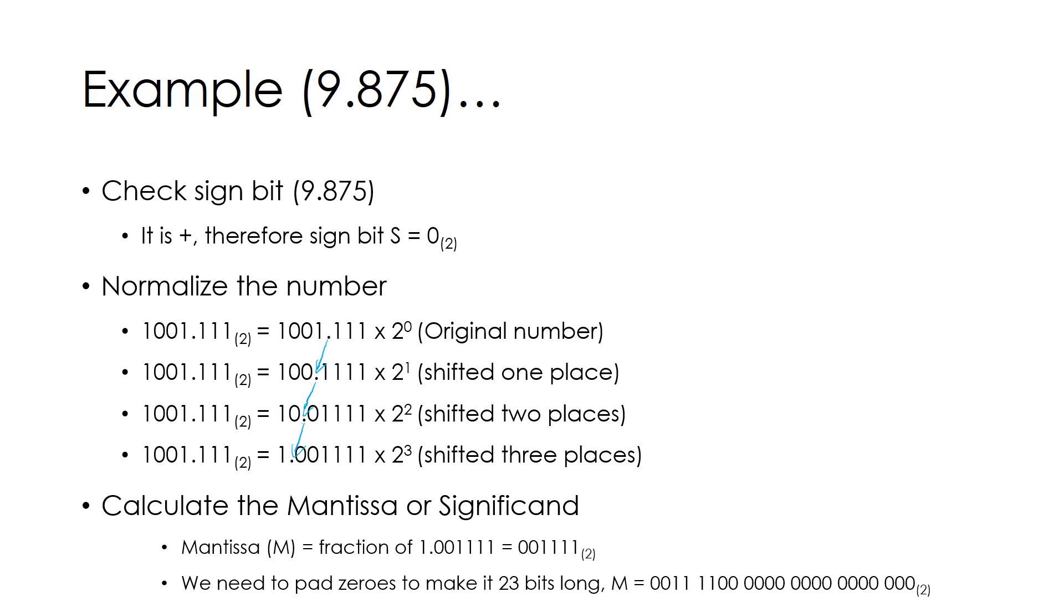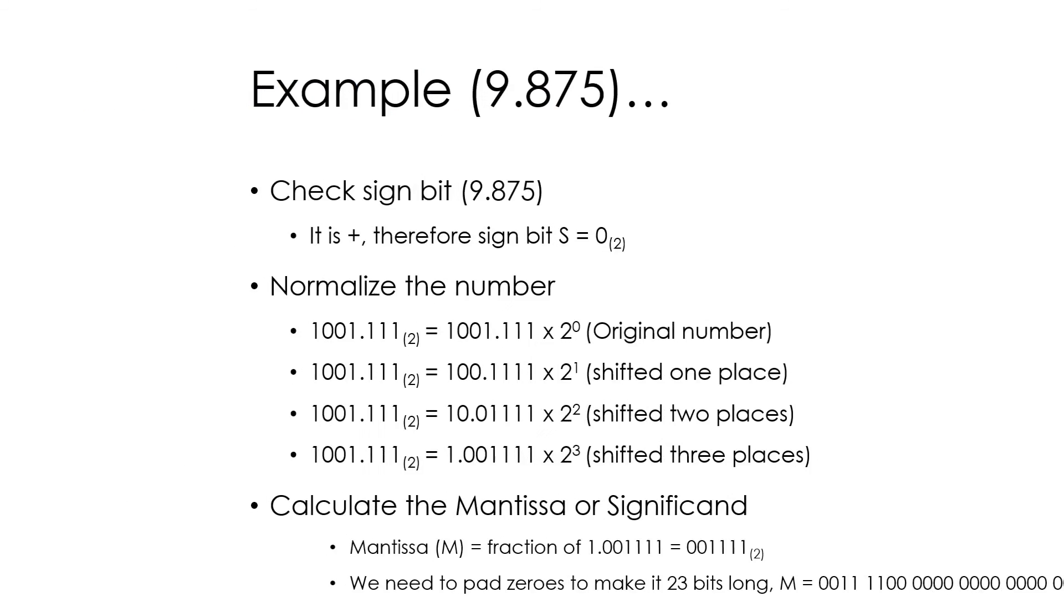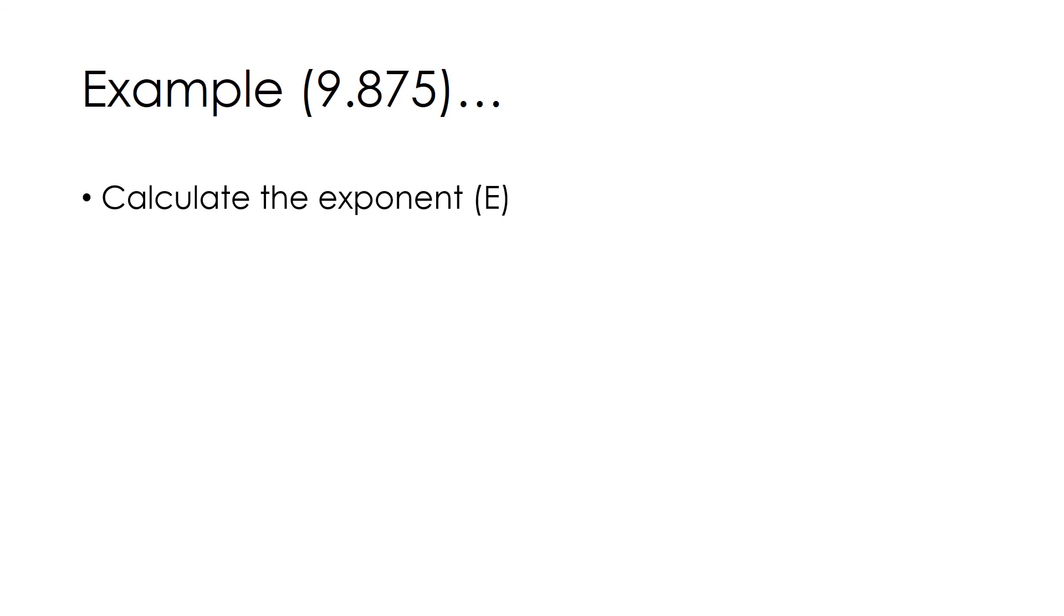Finally calculate the exponent. Exponent E equals number of bits shifted in normalization plus bias. Therefore E = 3 + 127 = 130, which in binary is 10000010.